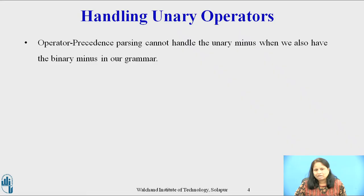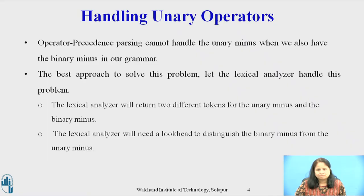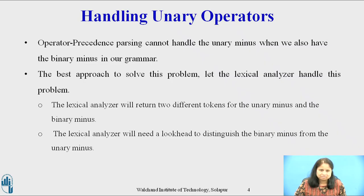Operator precedence parsing cannot handle the minus sign when it serves both as a unary prefix and a binary operator. If we give unary and binary minus the same precedence, then we will fail to parse a string like id minus id correctly. The best approach is to let the lexical analyzer handle this problem. The lexical analyzer will return two different tokens for the unary minus and the binary minus, and will need a look-ahead to distinguish them.